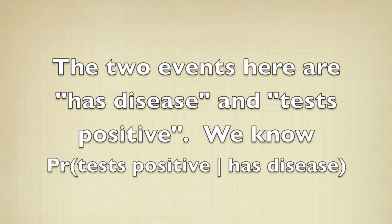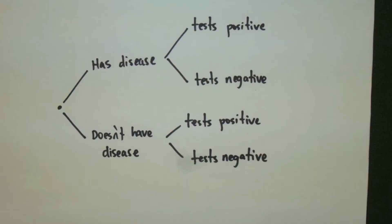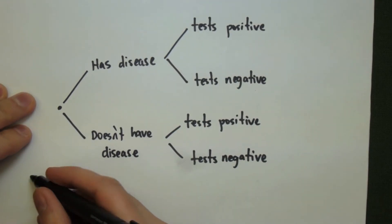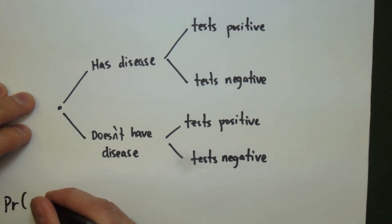The two events we're working on here are you have the disease and you test positive, and we know what the probability of testing positive given you have the disease is. That's 95%. So what about the other direction? Well, we make the tree, and the tree is going to look like this because we know the conditional probabilities in this particular direction. The probability they test positive given they have the disease is 95%.